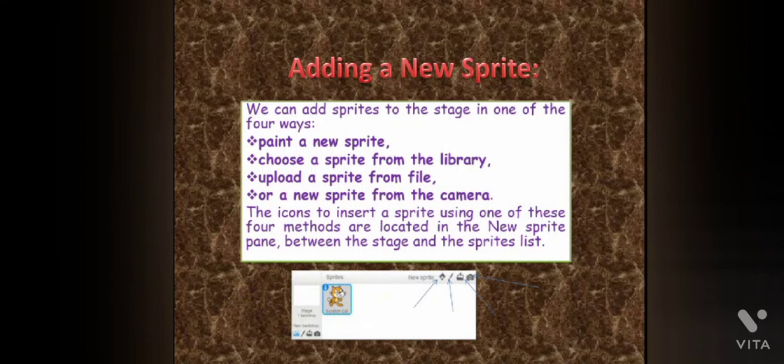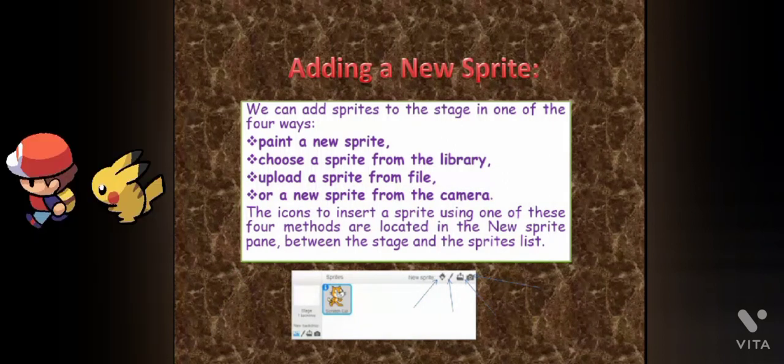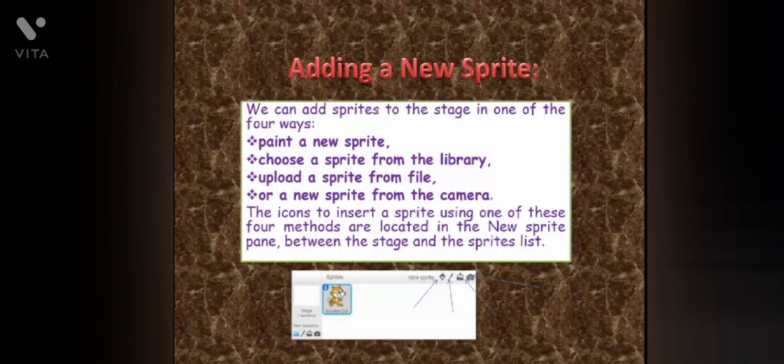How do you add a new sprite? We can add a sprite to the stage in one of four ways. First, paint a new sprite — you can draw a new sprite using this option. After clicking on it, the paint editor opens on the right where you can draw the new sprite. The new sprite gets automatically added to the sprite list.